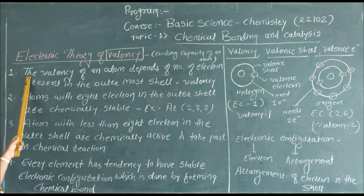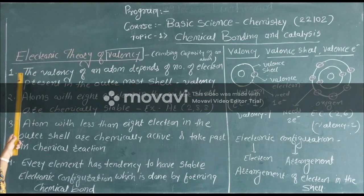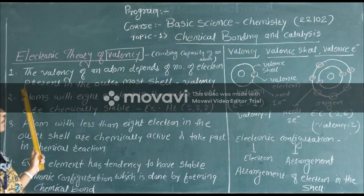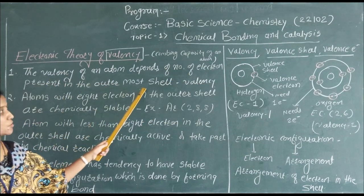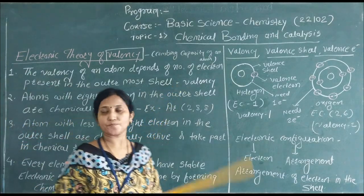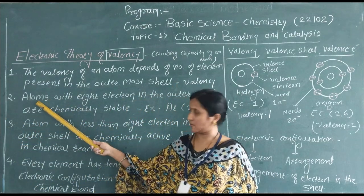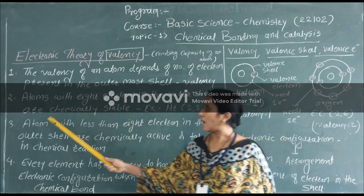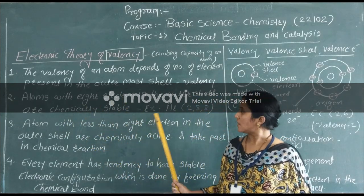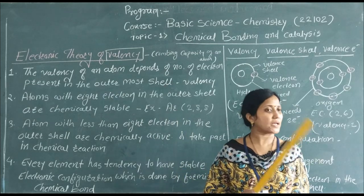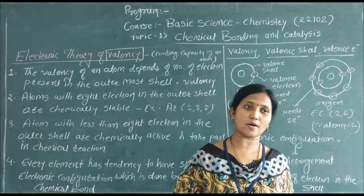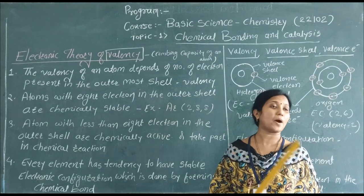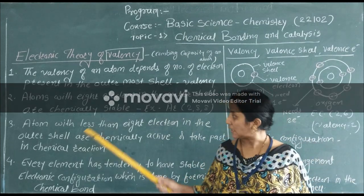This is the Electronic Theory of Valency. The valency of an atom depends upon the number of electrons present in the outermost shell. Atoms with eight electrons in the outer shell are chemically stable. Those atoms having eight electrons in the last orbit have completed their octet, so they are chemically stable and do not take part in any chemical reactions.